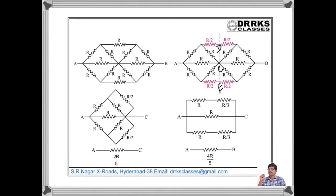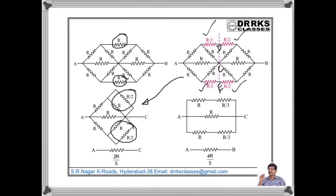Let us find out the effective resistance between A and B. Here, this resistor can be split up into two parts: R by 2, R by 2 — and similarly for the other resistors — so that we have a symmetry line between A and B passing through points D, C, and E. All points on the symmetry line are at the same potential, so we can connect a wire through them. Then R and R by 2 are in parallel — in series with the adjacent resistor — and similarly on the other side. The effective resistance between A and C is 2R by 5, and the effective resistance between A and B is double that: 4R by 5.